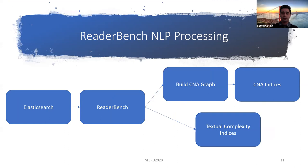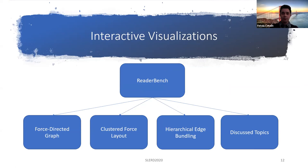The next step is the ReaderBench NLP processing pipeline, or CNA pipeline. We retrieved the discussion threads from Elasticsearch and fed them into ReaderBench, which built the CNA graph and computed the CNA indices as well as the textual complexity indices. I also mentioned interactive visualizations, which are a separate part of the output. After finishing the computation of all these indices, there are three main views that are generated, plus a heatmap of the discussed topics in the community.